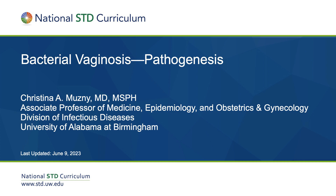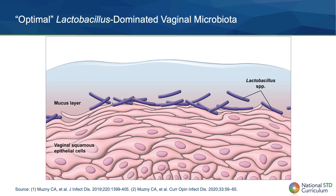which is a complex process involving significant changes in the vaginal microbiome. This model is based on an extensive review of the literature in addition to data generated by my research team. In a healthy state, the vaginal microbiome is dominated by lactic acid and hydrogen peroxide-producing Lactobacillus species, which lowers the vaginal pH and protects the environment against invading pathogens and pathobionts.